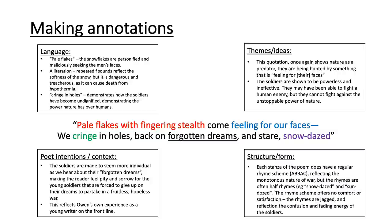The main theme we are presented with here is the power of nature, as nature is presented as a predator. The soldiers are shown to be powerless and ineffective — they may have been able to fight a human enemy, but they cannot fight against the unstoppable power of nature. In this quotation, Owen seeks to create further sympathy for the soldiers by making their situation seem hopeless, so much so that their dreams are now forgotten, just as Owen, who died at just 25 years old, would have felt hopeless and resigned to death himself. Each stanza of the poem does have a regular rhyme scheme — that A-B-B-A-C scheme — reflecting the monotonous nature of war. But the rhymes are often half-rhymes, offering no sense of comfort or satisfaction, because war in itself is not satisfying.